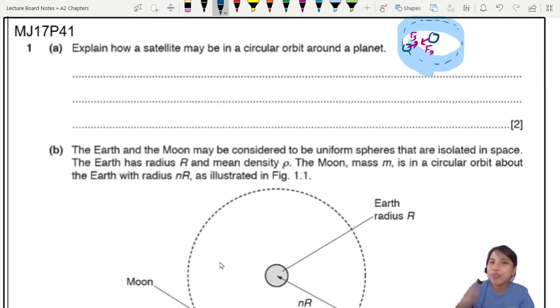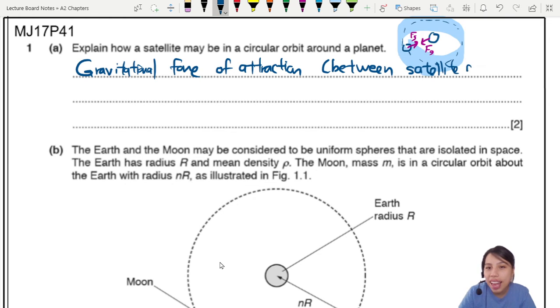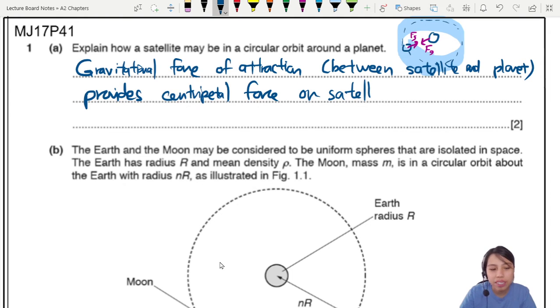So we're going to say, who provides centripetal force? Our favorite sentence. So you say gravitational force. Gravitational force of attraction. If you want to add in a little note, between the satellite and the planet. So this force of attraction provides centripetal force. That is a very important sentence. Who provides centripetal force? Gravitational force provides centripetal force. On satellite. So the main idea is gravitational force provides centripetal force. That's the second point in this kind of question.